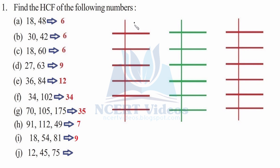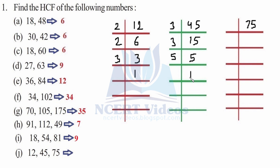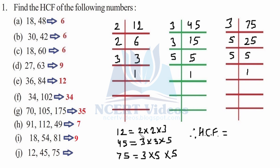Part j: 12, 45, and 75. For 12: 2×6, 2×3, giving 2×2×3. For 45: 3×15, 3×5, giving 3×3×5. For 75: 3×25, 5×5, giving 3×5×5. Here the common factor is 3 only — we can't take 2, and we can take 3 only once. So 3 is the HCF. That was your part j. This is how you find HCF by taking common factors.